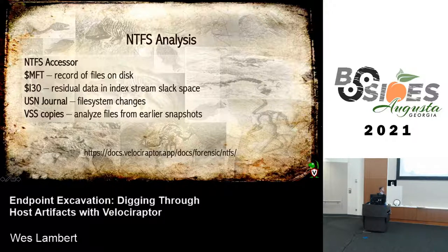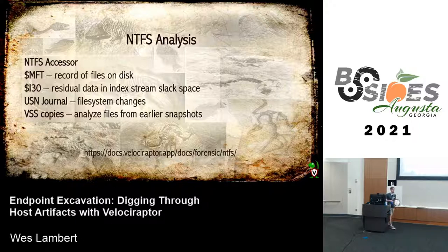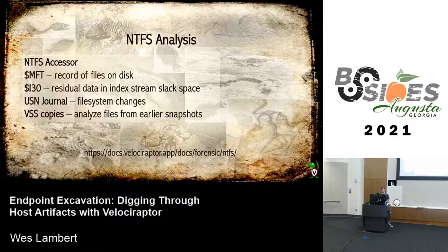For NTFS analysis, Velociraptor has a lot to offer. For example, MFT — we can check when files dropped on disk. I30 — we can carve the slack space in the index stream. USN — tracking files dropped to disk; USN will typically rotate, so it's something we constantly watch. And VSS — we can search Volume Shadow Service copies to see if a file was or is present. It's very powerful for NTFS analysis.